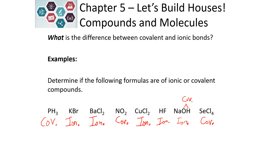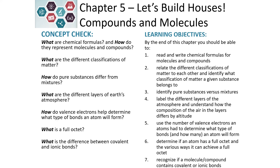To summarize: nonmetals attached to nonmetals are covalent; metals attached to nonmetals are ionic. In this chapter, you have learned about the classifications of matter and how we represent molecules and compounds using chemical formulas. You can identify pure substances from mixtures, learned what a full octet is, why atoms have varying numbers of valence electrons, and the differences between covalent and ionic bonds formed in order to complete the octet.